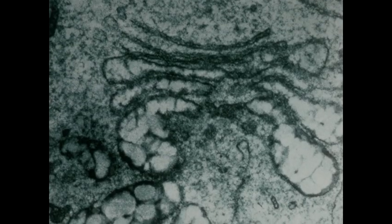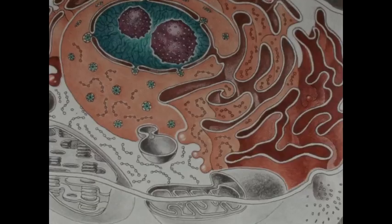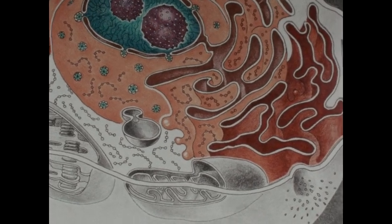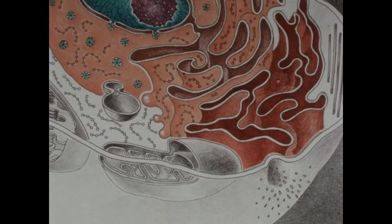Connected with the endoplasmic reticulum is a region of densely folded membrane called the Golgi apparatus. Membranes of the Golgi apparatus fuse with the cell's outer membrane, allowing products to be exported out of the cell.